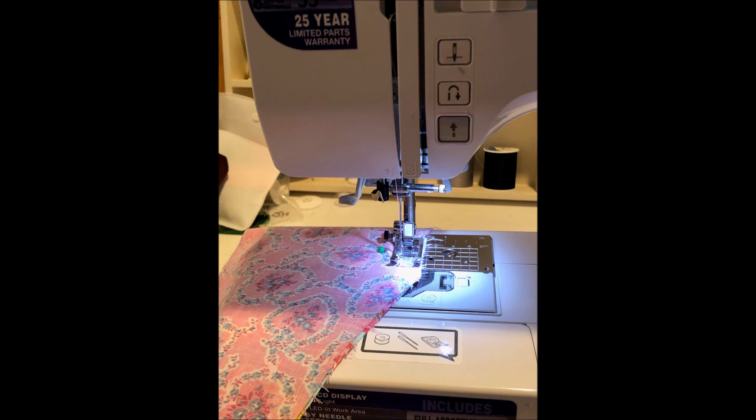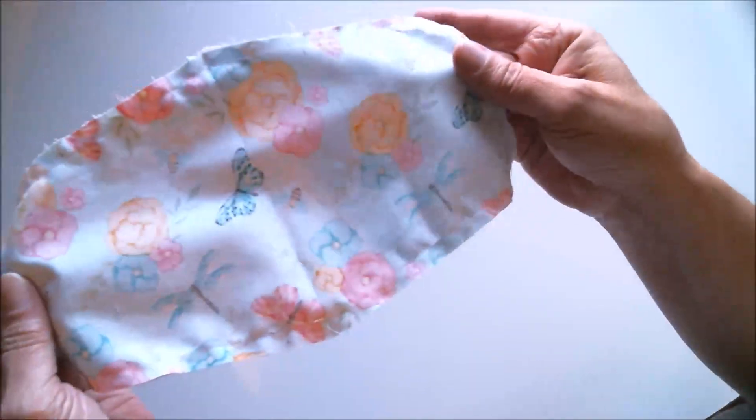Now it's time to go over to the sewing machine and sew a seam around the edges, approximately a quarter of an inch to a half an inch from the edge. Remember to backstitch at the beginning and the end just to keep it more secure, and don't forget to leave that opening that was two and a half to three inches.